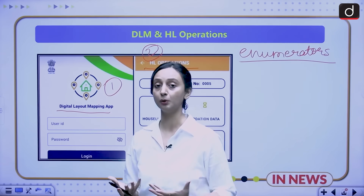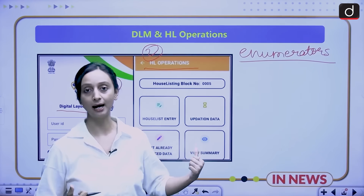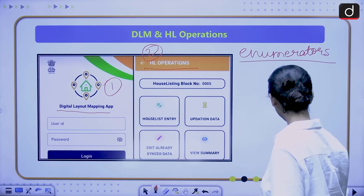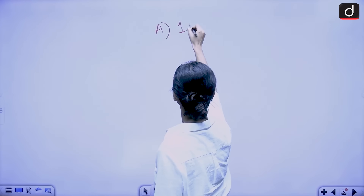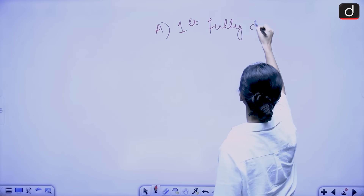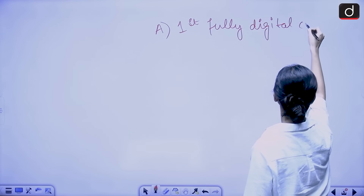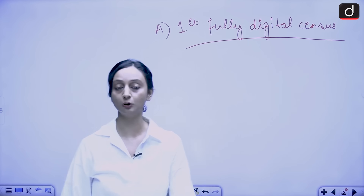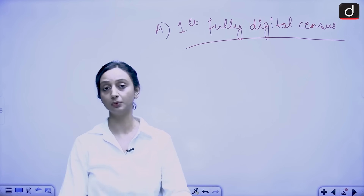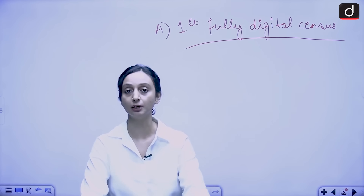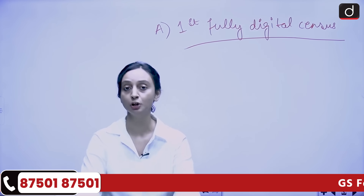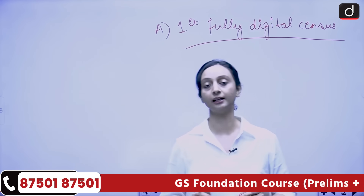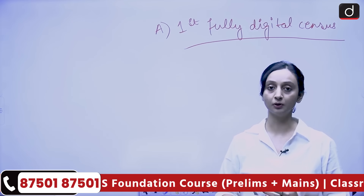Let's understand the whole story of the population census to see where these two apps fit in. The census of 2027 is unique because, firstly, it is the first fully digital census. These two applications have been launched as part of that effort, and there is also a facility of self-enumeration being provided to citizens so they can enter their own information, minimizing the role of enumerators and reducing manual errors.